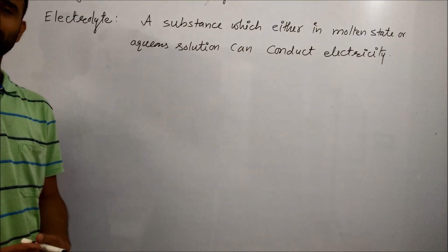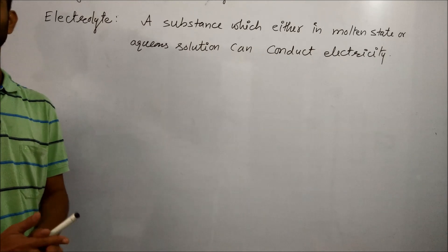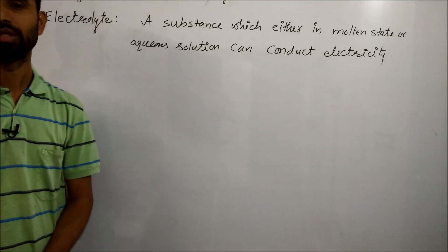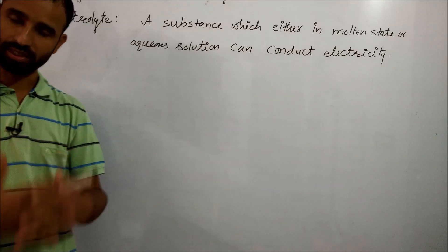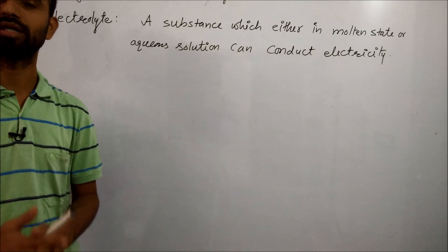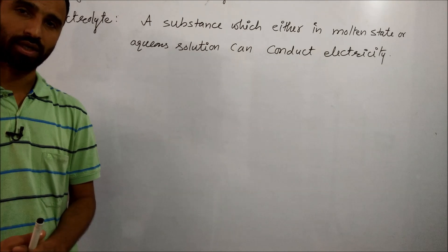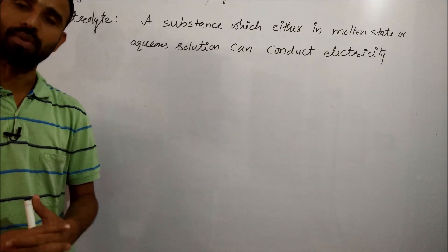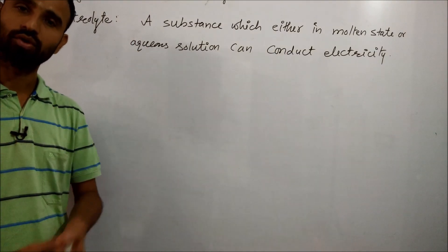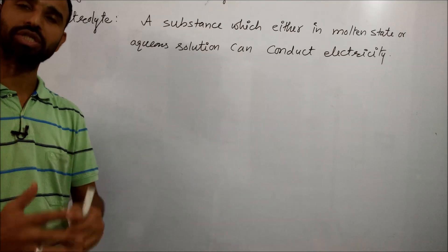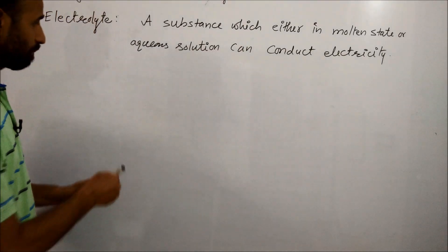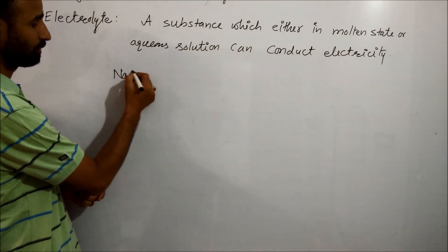Today's topic is strong and weak electrolytes. An electrolyte is a substance which, either in molten state or in aqueous solution, can conduct electricity. Current is carried by ions, so an electrolyte is either ionic or it furnishes ions in its aqueous solution. For example, NaCl is an ionic compound.